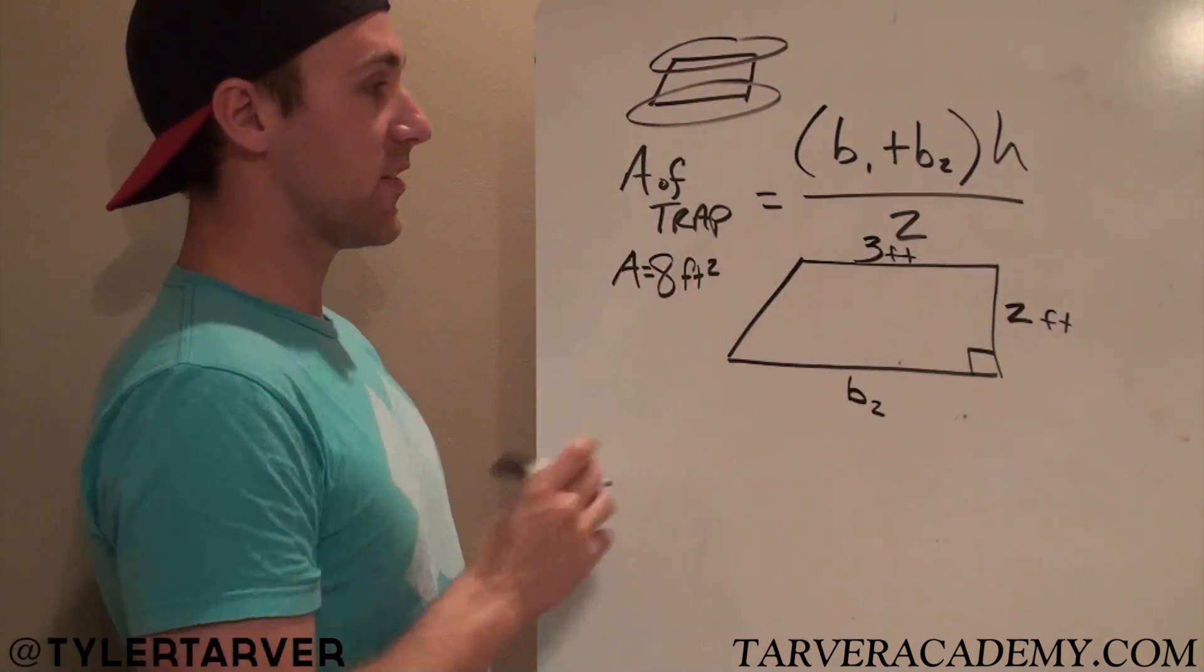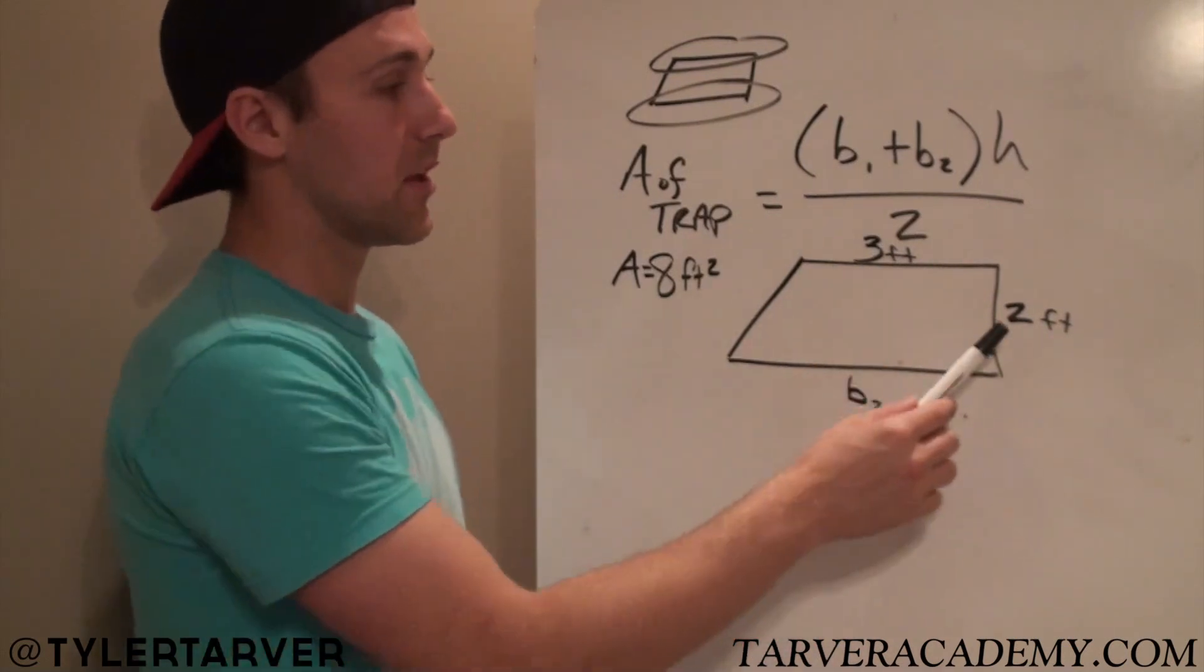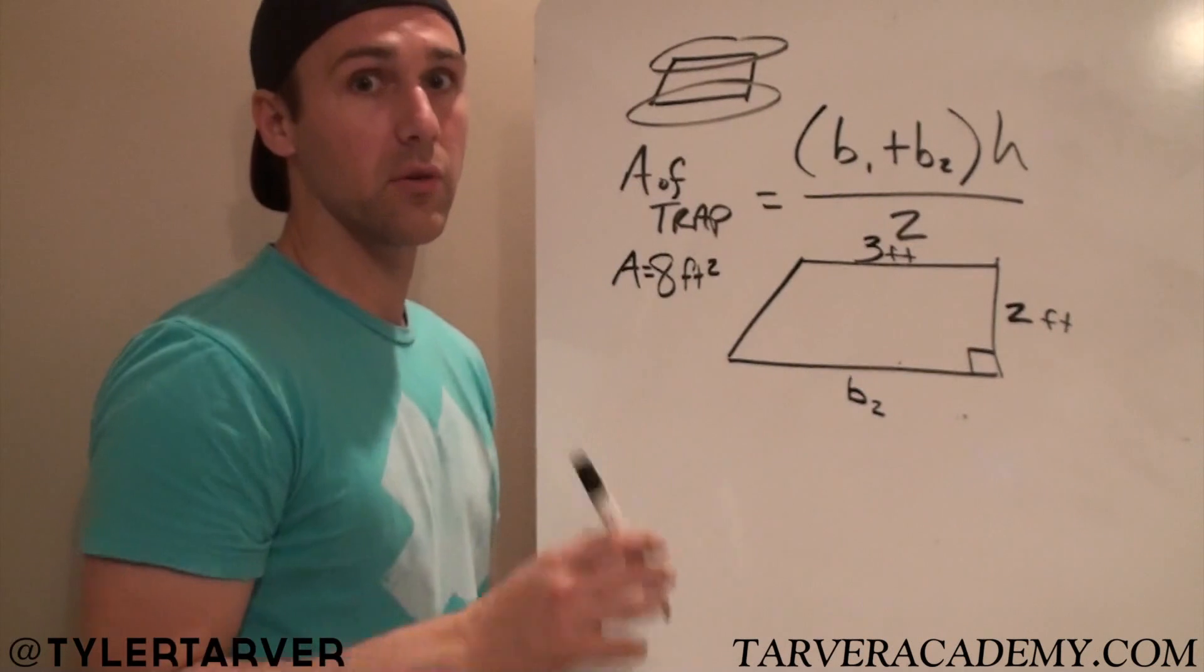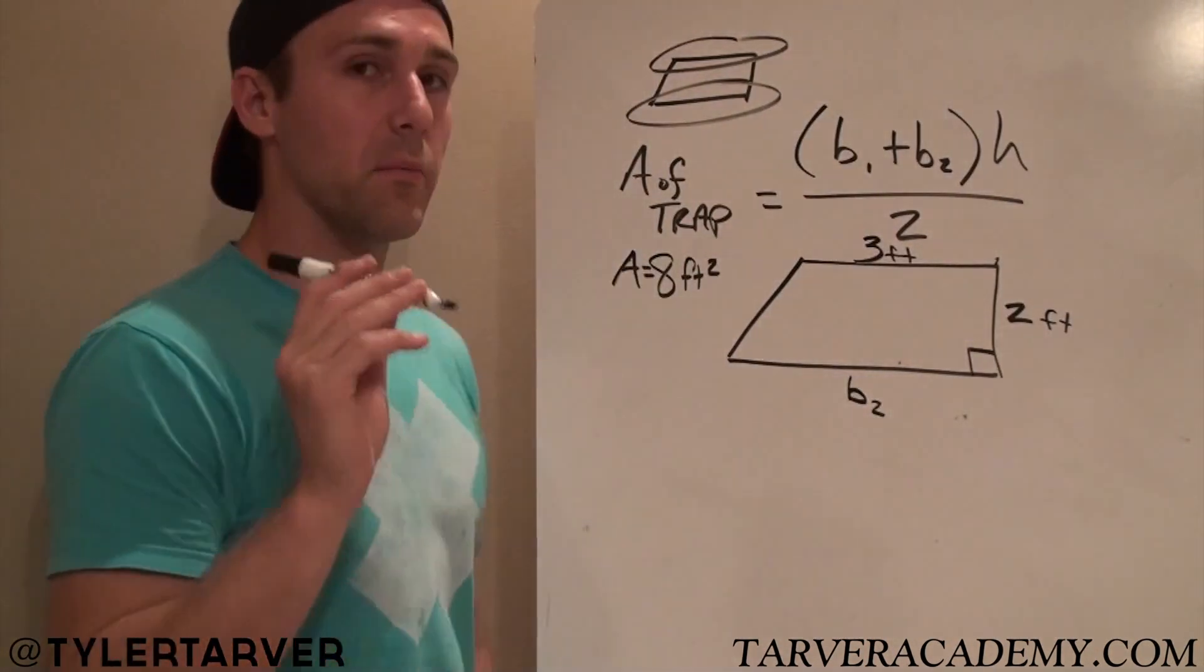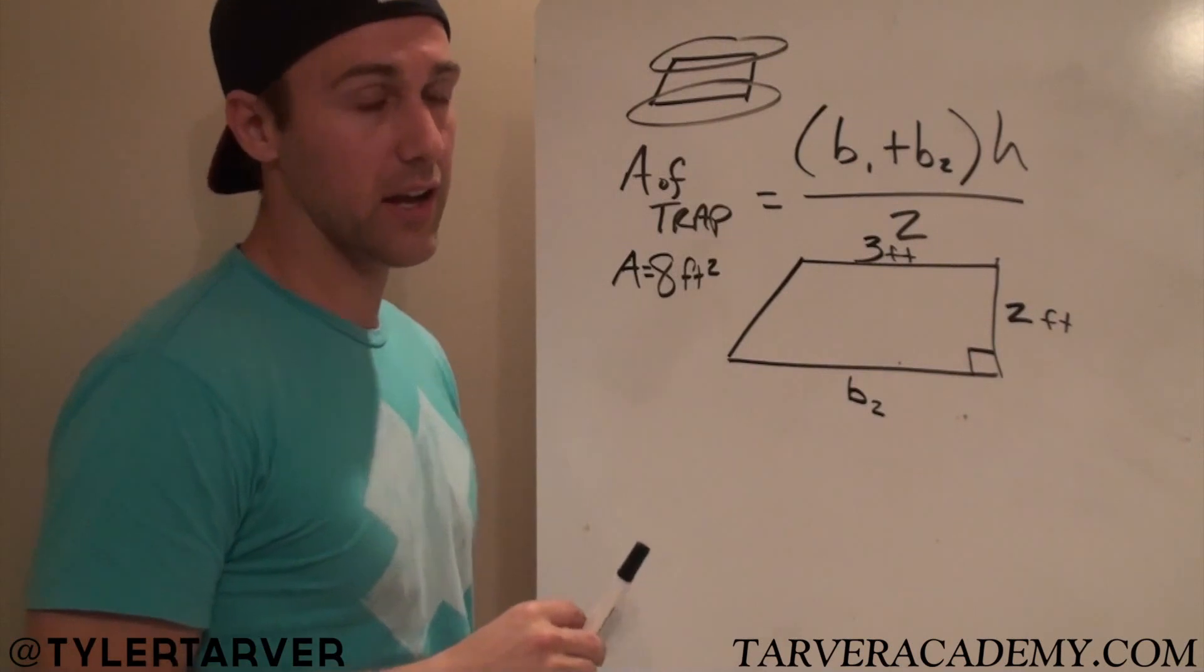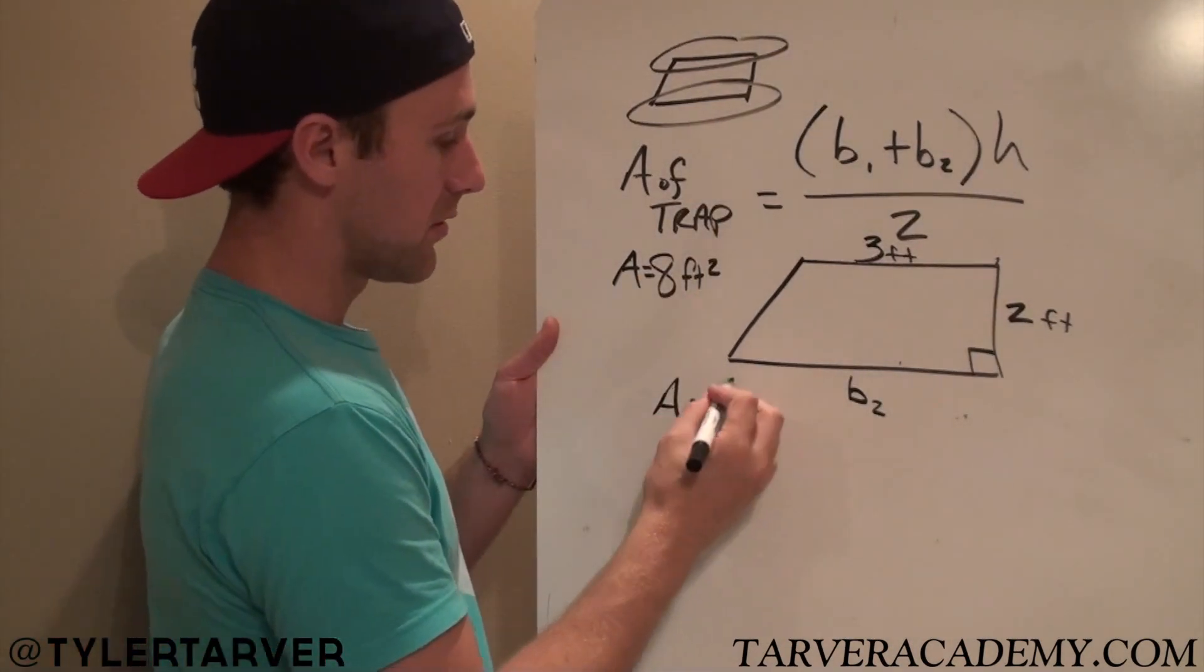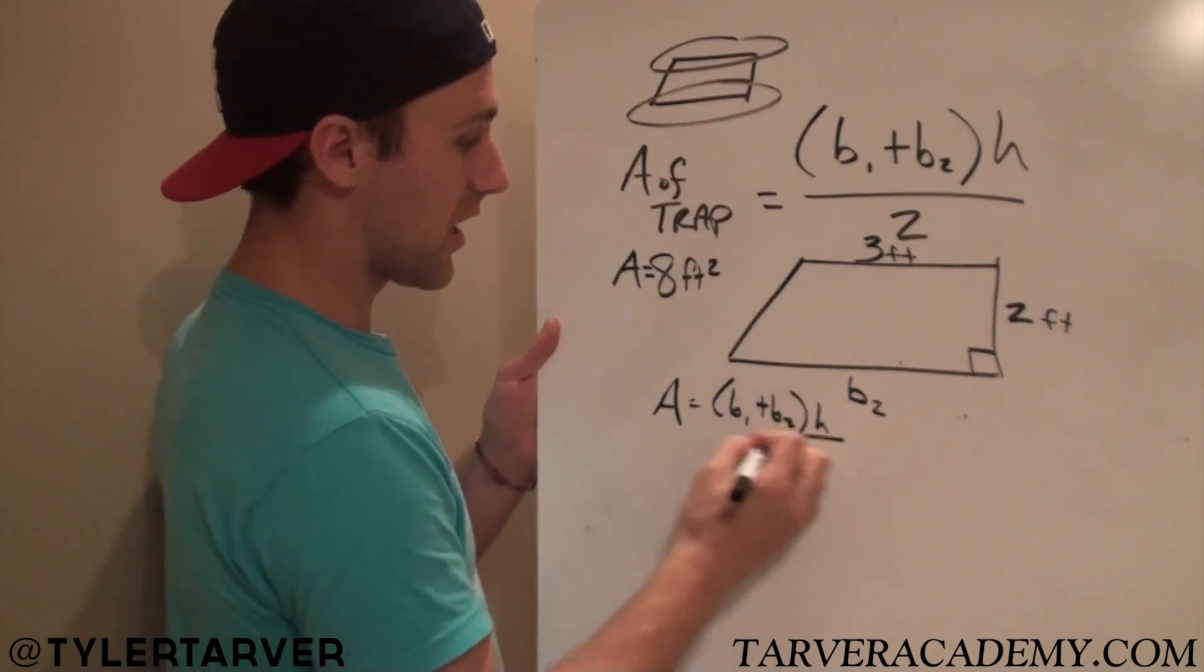We know the area is 8 feet. We know one of the bases, which apparently has been our base 1. We know our height is 2 because it goes from one base and hits the other one at a right angle. That's important, just like parallelograms and triangles. My saying that I always say is, plug in what you know to find what you don't know. Here's our formula.